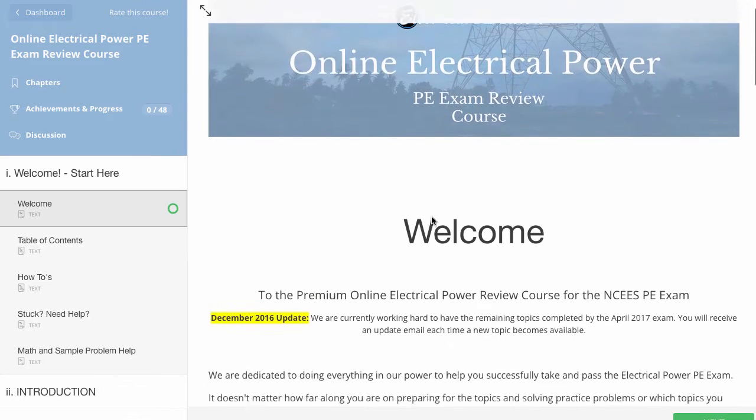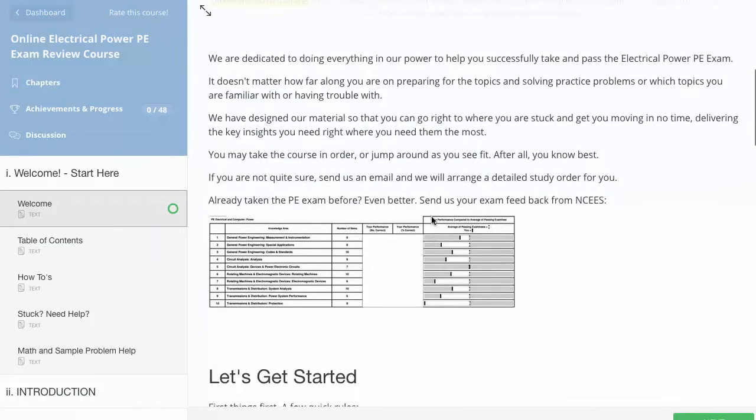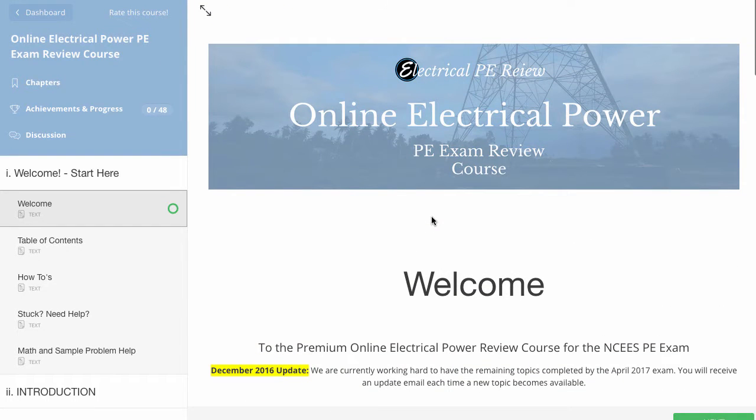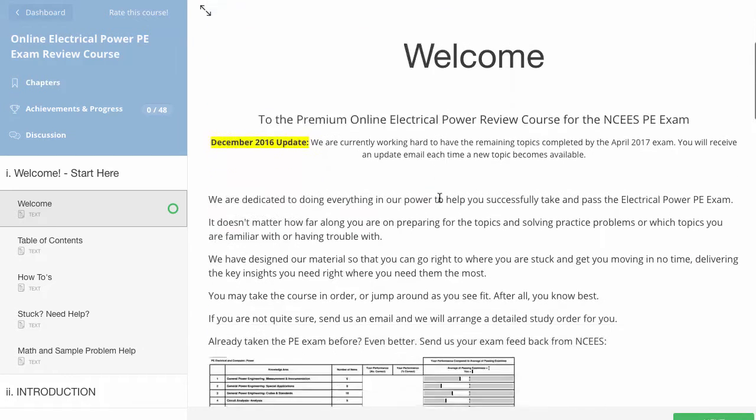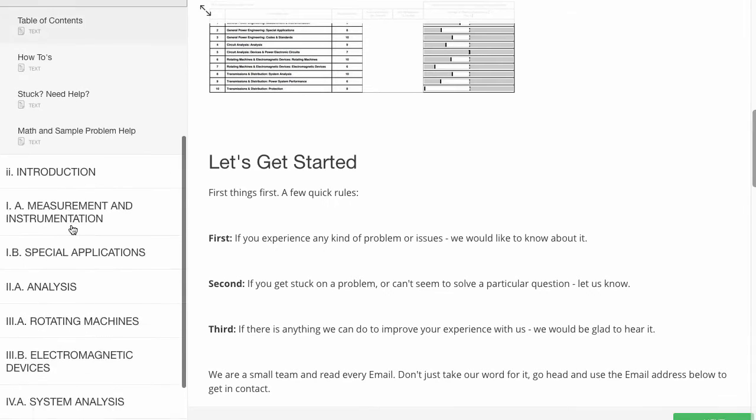Then after a couple of seconds you should be taken right to the online course. It's that easy. There is no waiting for any kind of verification email or having to do any captchas. It takes you right to it. So once you get to the course this is the first thing you're going to see. This is the course chapter window here on the right and the menu bar here on the left.